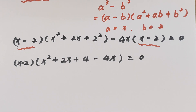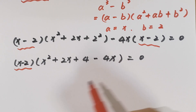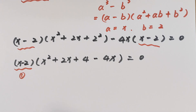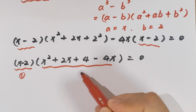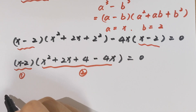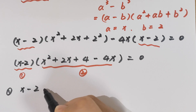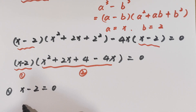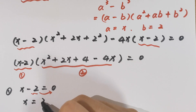So we have two cases. The first case is x minus 2 equals 0. Taking 2 to the right side, x equals 2.